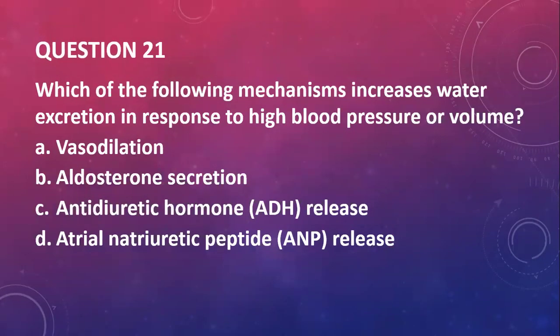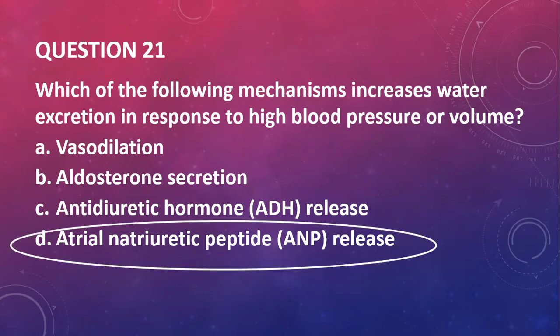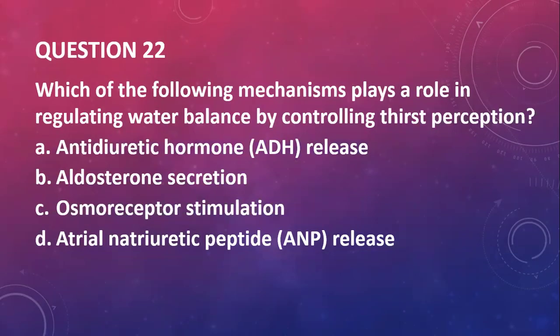Question twenty-one: which mechanism increases water excretion in response to high blood pressure or volume? We have vasodilation, no. Aldosterone, that's for sodium. Antidiuretic hormone, that is directly for water. The atrial natriuretic peptide is secreted by the pericardium of the heart. That will be it.